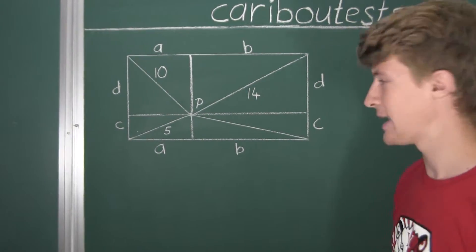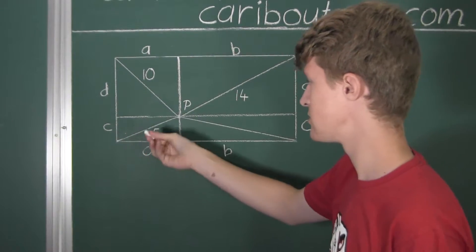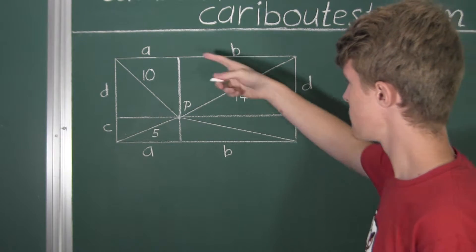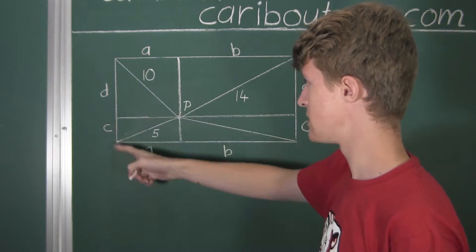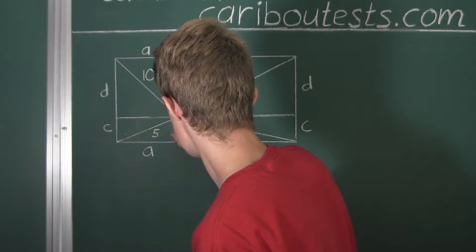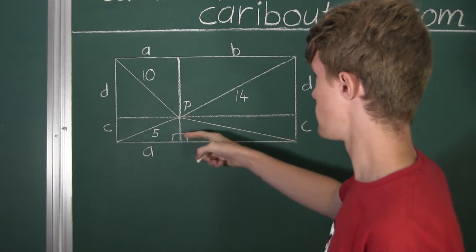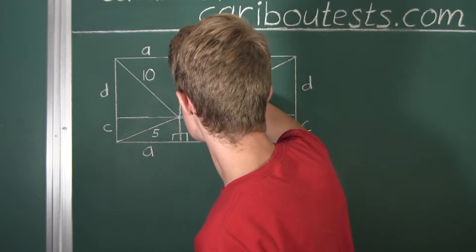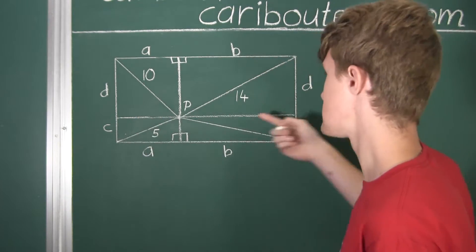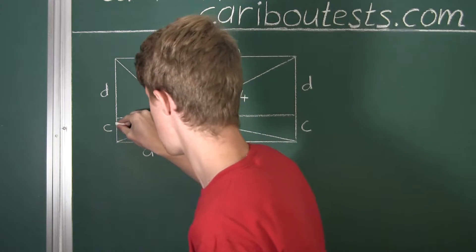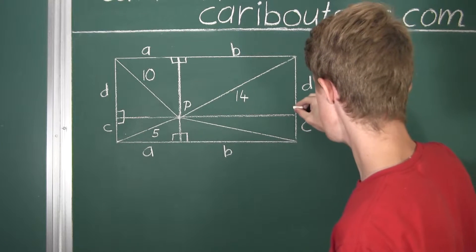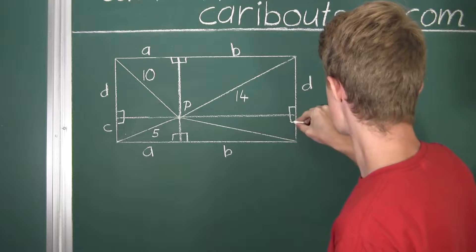A rectangle has four corners that are all 90-degree right angles. Since this line is parallel to this line, we know that these angles must be right angles — and not only here, but also of course here. Similarly for this line, since it is parallel to the top, it also must have right angles.